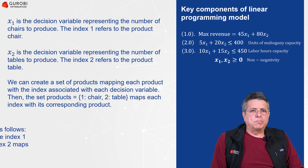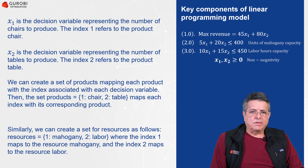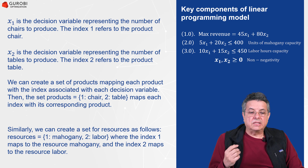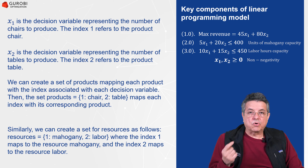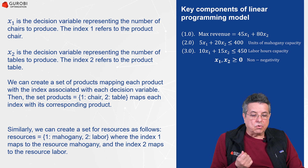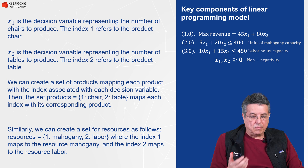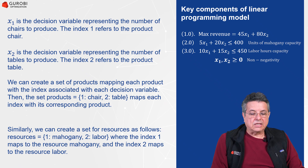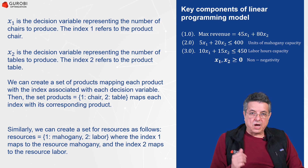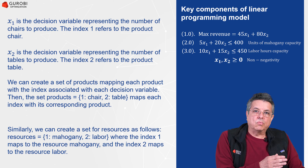To explain the key components of linear programming, we have defined two decision variables. X1 represents the number of chairs to produce, and we use the index 1 to refer to the product chair. X2 is the decision variable representing the number of tables to produce, where index 2 refers to the product table. The set of products will be: chair with index 1, and table with index 2.